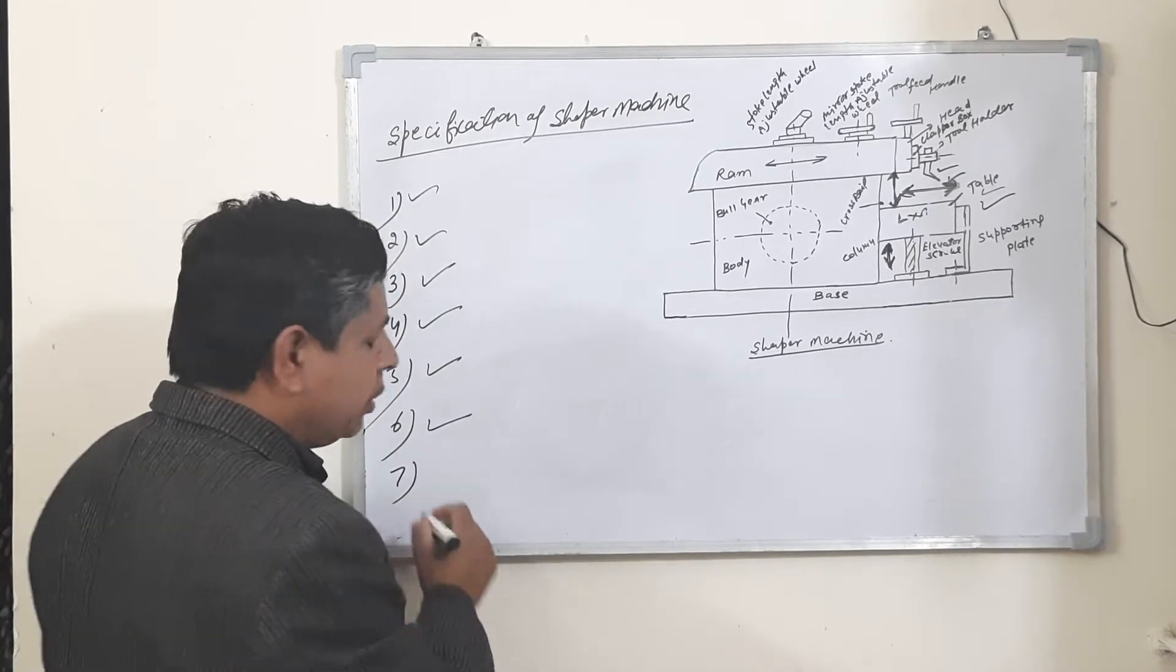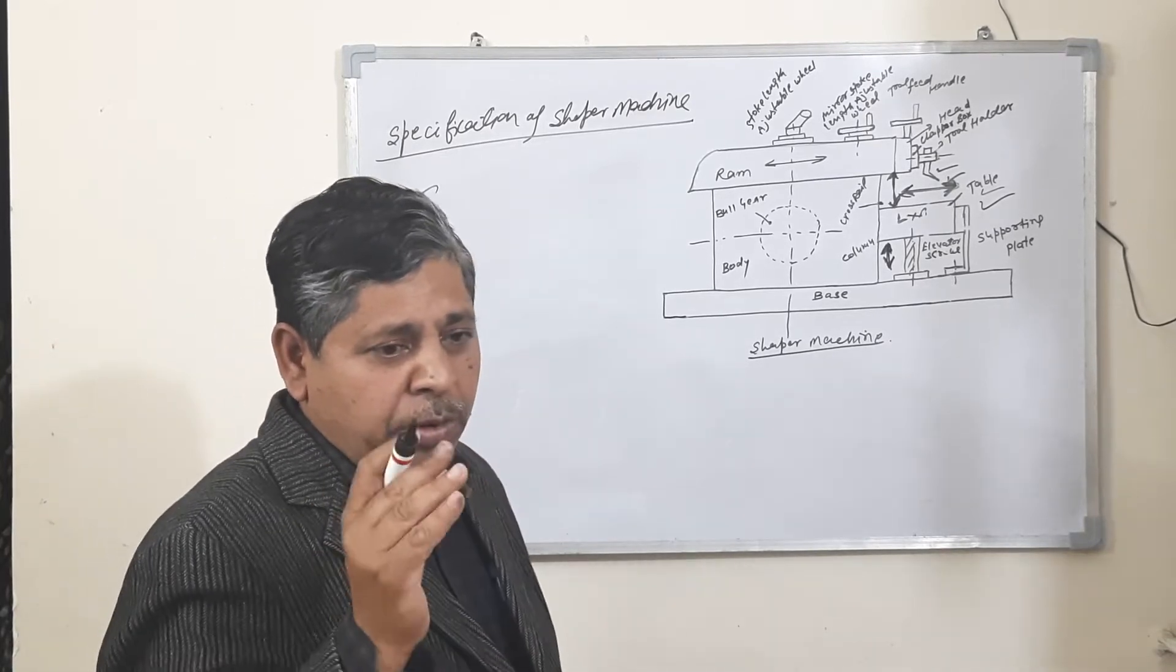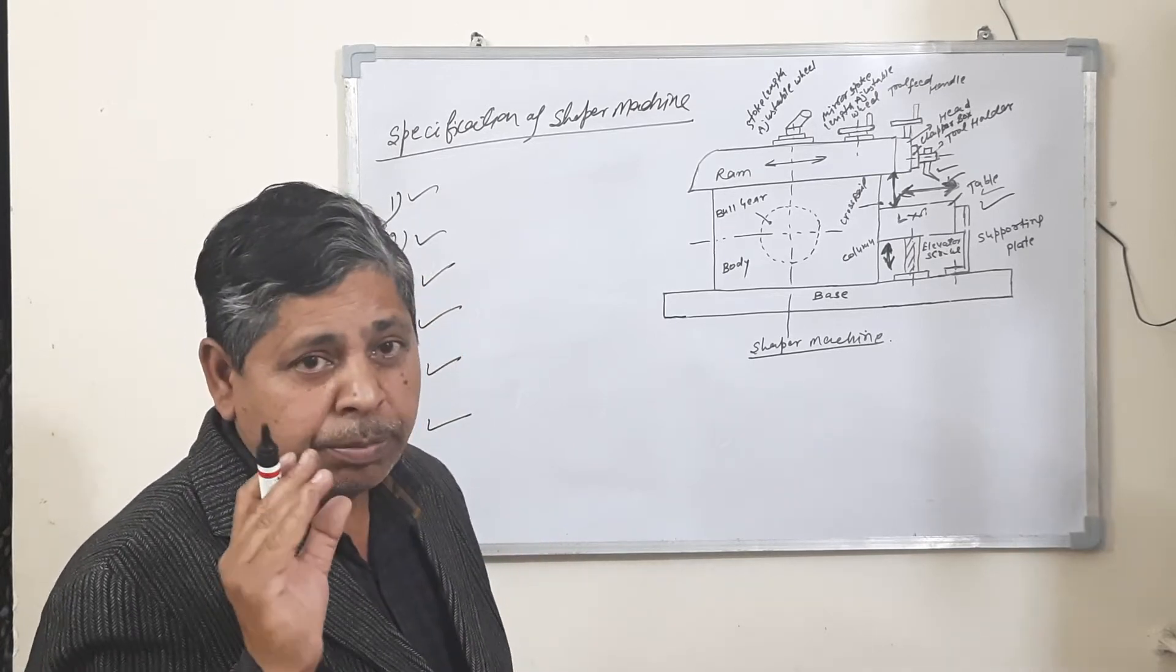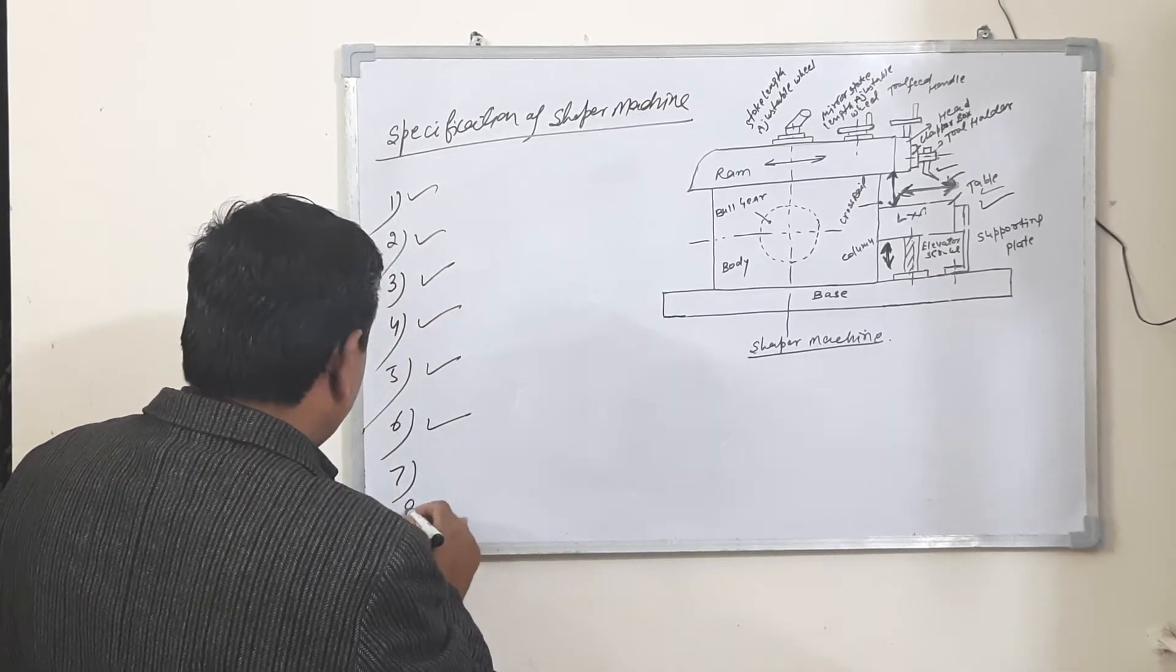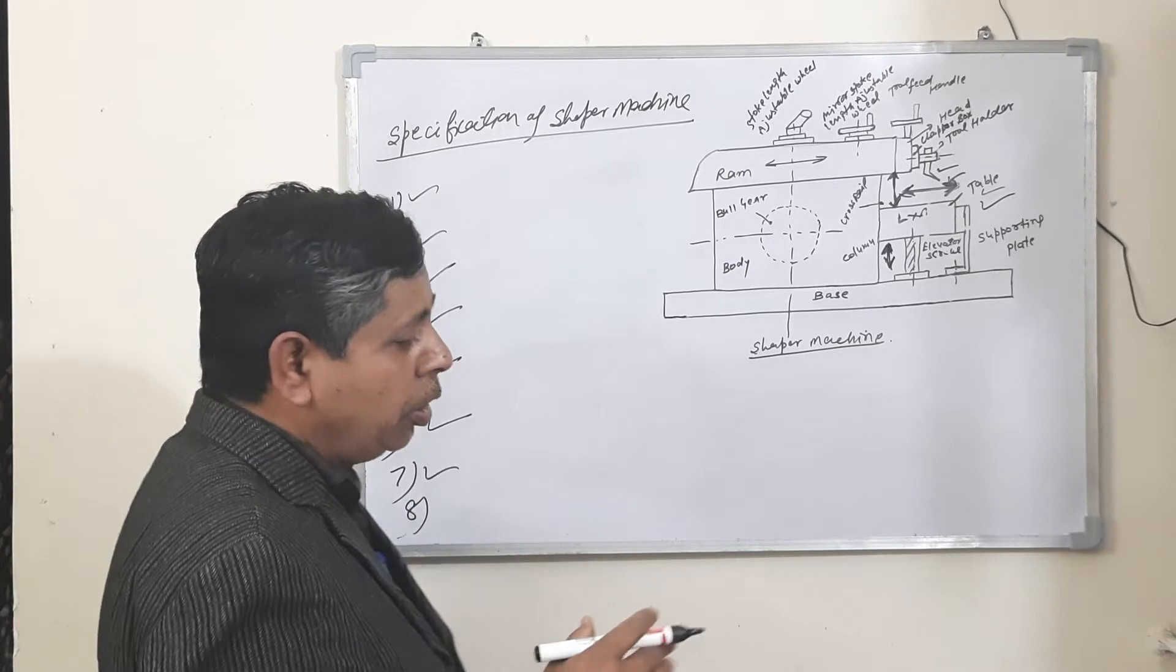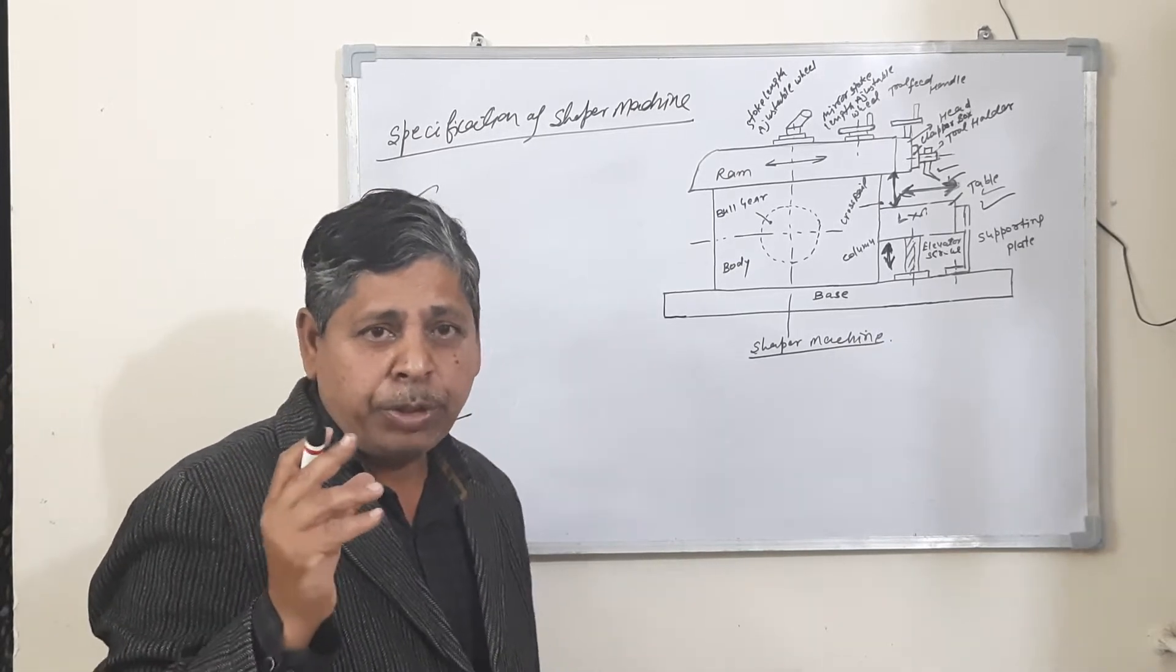Number seven: the stroke cycles per minute. Number eight: the total gross weight of the machine.